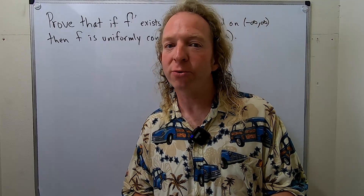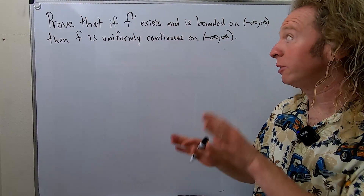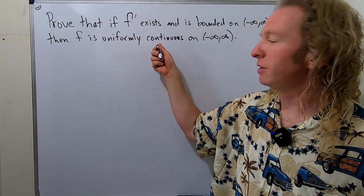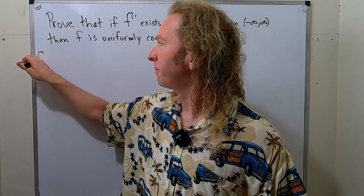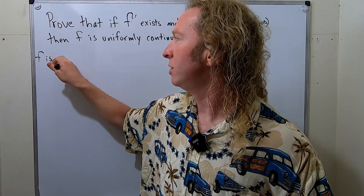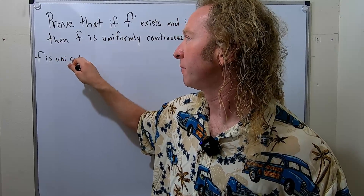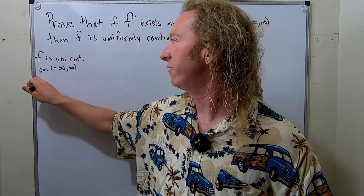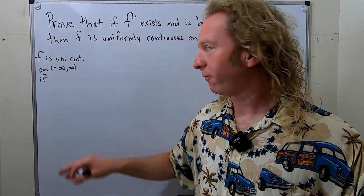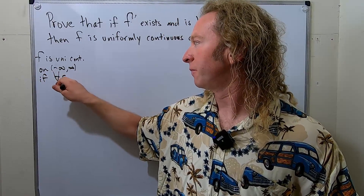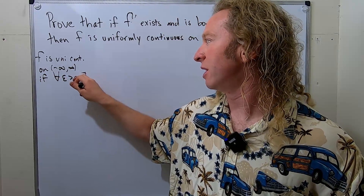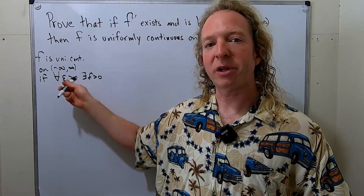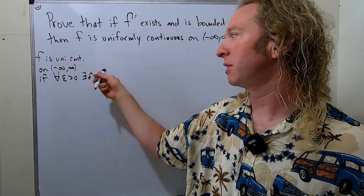Before we do the proof, I'm going to briefly recall some definitions that we need. So f is uniformly continuous — I'll just say 'unicontinuous' to save time — on negative infinity to infinity if, for every epsilon greater than zero, there exists a delta greater than zero. Notice the delta is written after the epsilon; it only depends on epsilon, not on x and y.